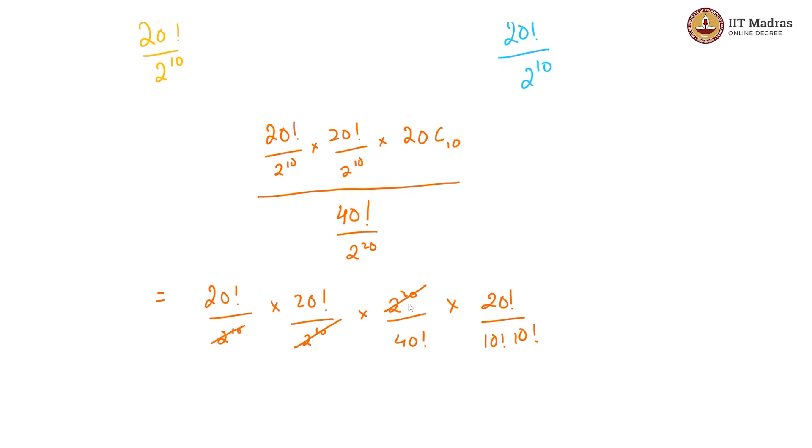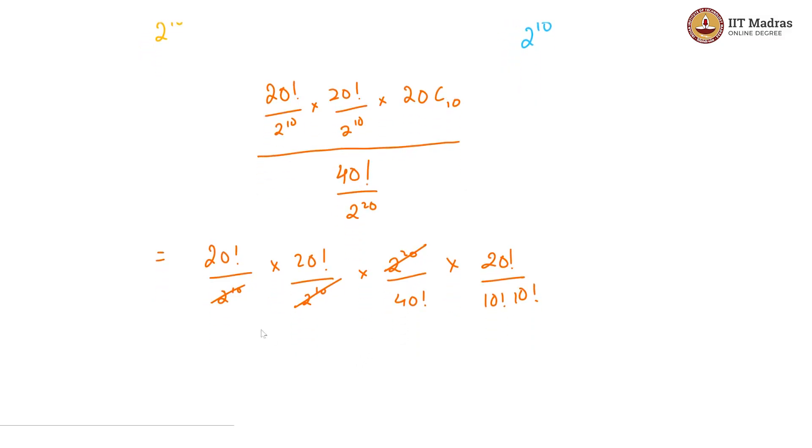These both get cancelled off with this 2^20 and thus we will get (20!)^3 / (40! × (10!)^2).